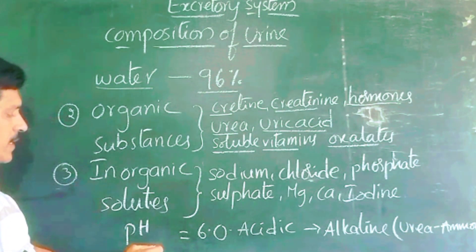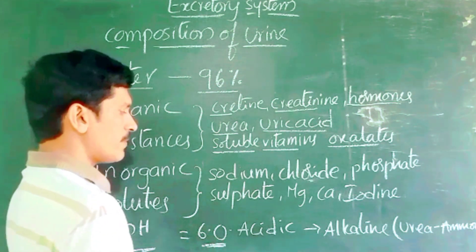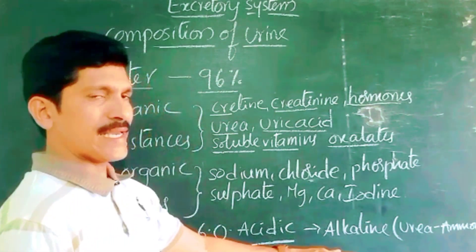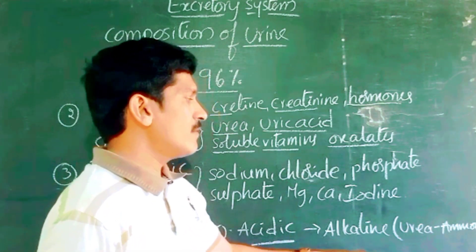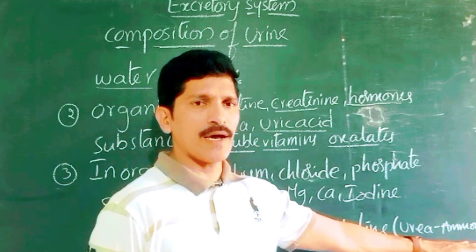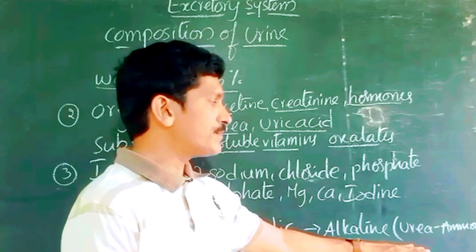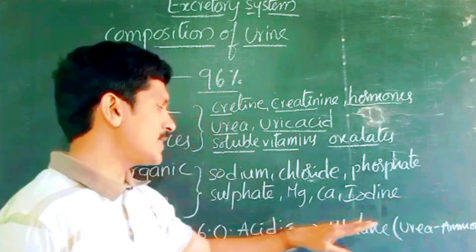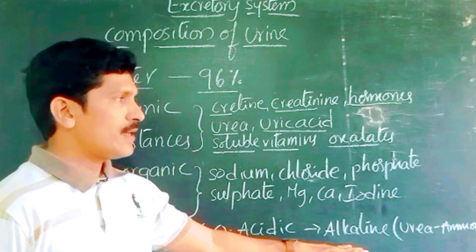What is the pH of the urine? The pH of the urine is 6.0 — it is acidic, but it slowly becomes alkaline. The acidic urine becomes slowly alkaline in nature whenever the urea content in the urine is decomposed into ammonia.